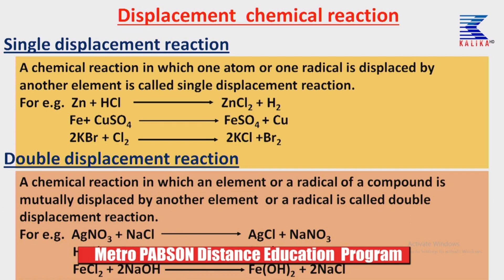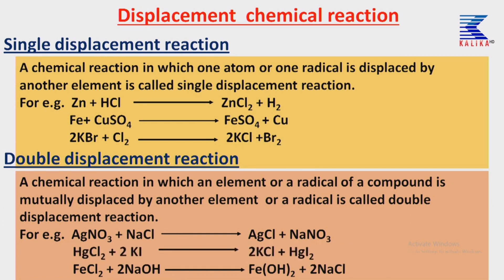Three examples are given. First: the reaction between silver nitrate and sodium chloride — sodium and silver atoms are mutually displaced. Silver reacts with chlorine to form silver chloride, and sodium combines with the nitrate radical to form sodium nitrate. Second: mercury chloride reacts with potassium iodide to give potassium chloride and mercury iodide. Third: iron chloride reacts with sodium hydroxide to give iron hydroxide and sodium chloride.